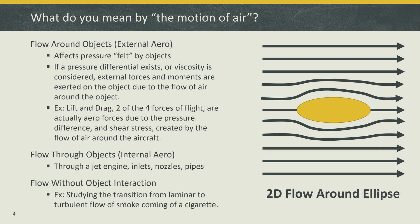Aerodynamics isn't only concerned with flow around an object. The motion of air can also mean how air behaves as it flows through an object, like engines, nozzles, or even pipe flow. Aerodynamics can also mean the study of air without interacting with an object at all — an example would be studying smoke as it transitions from laminar flow to turbulent flow, and we'll talk about that in a different video.